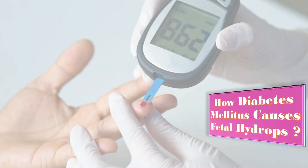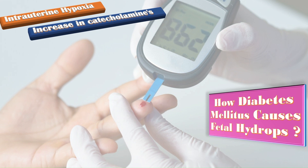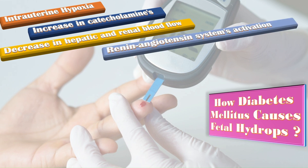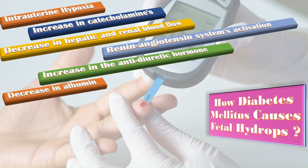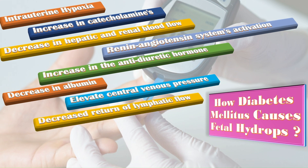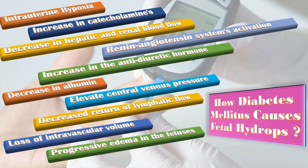Intrauterine hypoxia in a diabetic pregnant mother results in increased catecholamines, which causes decreased hepatic and renal blood flow due to redistribution of blood to the brain, heart, adrenals, and ductus venosus. This causes renin-angiotensin system activation and increase in antidiuretic hormone and decrease in albumin. These mechanisms elevate central venous pressure and lead to decreased return of lymphatic flow into systemic circulation, resulting in severe and progressive edema in the fetus.